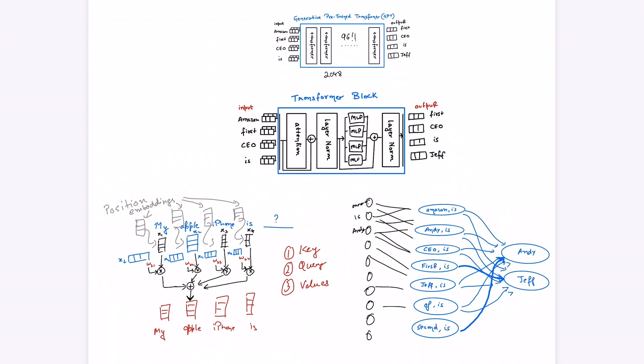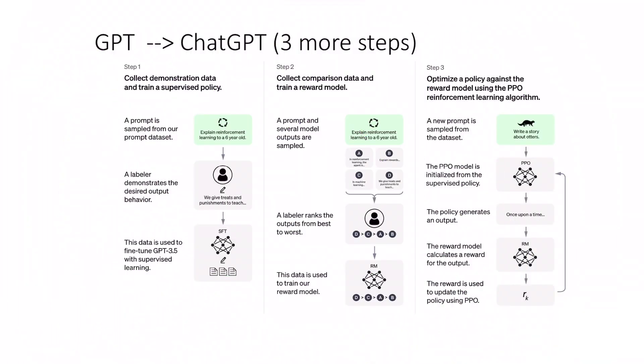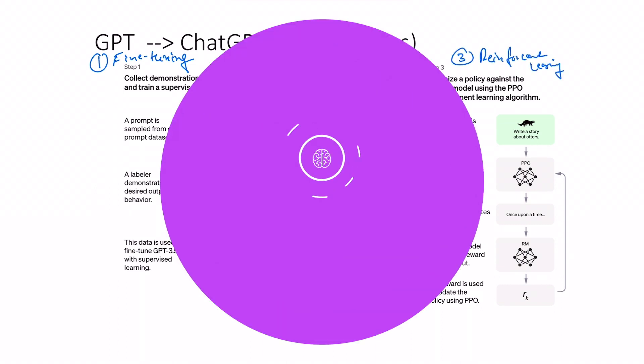Now the next part is going from GPT to chat GPT. Now the model has the knowledge of the language but we need three more steps to get it to a stage where we can interact with it. First is fine-tuning, second is human feedback, and third is reinforcement learning. Let's get started.